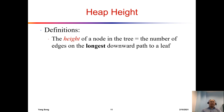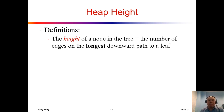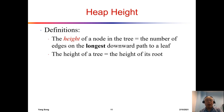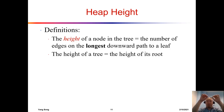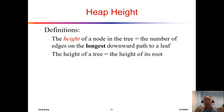Now we want to define the height of the heap. The height of a node in the tree equals the number of edges on the longest downward path to a leaf. The height of a tree or heap is the height of the root. If the root goes down one direction with four edges and the other direction has three edges, we take the higher one, so the height would be four.